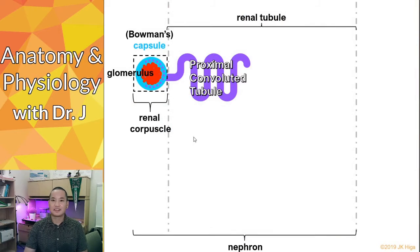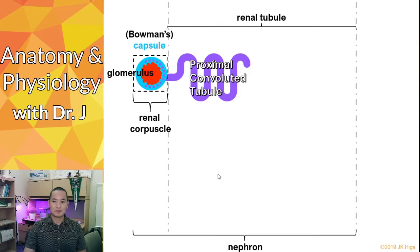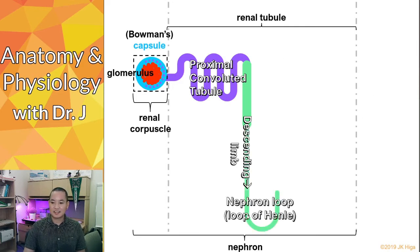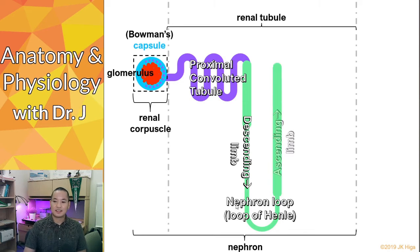Next we have the nephron loop, or loop of Henle — that's a common name and you should definitely know both. The nephron loop first descends into the medulla, so that's the descending limb. It goes from the cortex to the medulla and then does a U-turn, which is why it's called the nephron loop, and then it has the ascending limb.